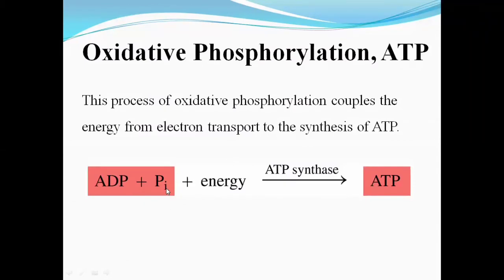ADP together with inorganic phosphate requires energy, which is provided when hydrogen ions flow back into the mitochondrial matrix through ATP synthase. This causes conformational changes and rotation in ATP synthase, resulting in the formation of ATP. For NADH, electron transfer occurs through complexes one, three, and four. Complex two is never involved in the transfer of protons.